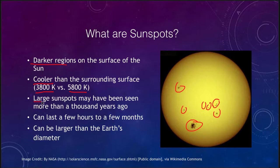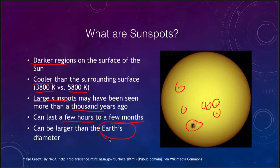Large sunspots may have actually been visible more than a thousand years ago — a large enough sunspot could be seen with the naked eye, although it is very dangerous to look at the Sun directly. The most recent modern detection of sunspots was by Galileo with the telescope. Sunspots can last anywhere from a few hours to a few months, and they can be larger than the size of the Earth.